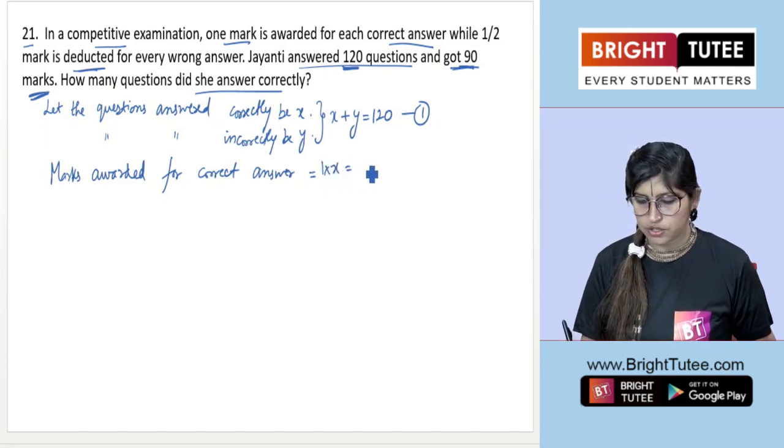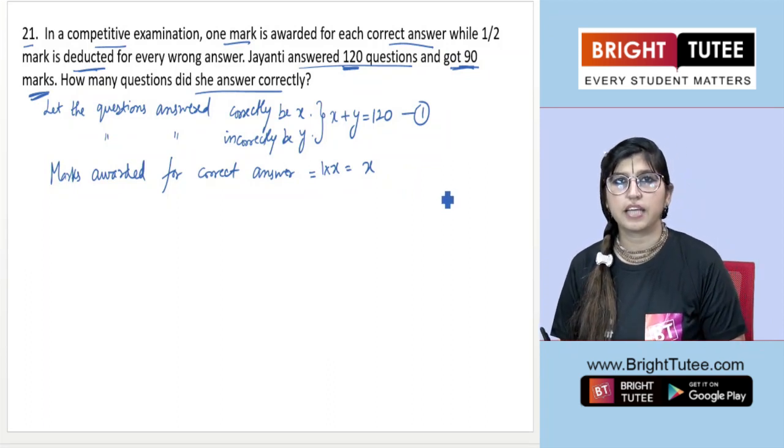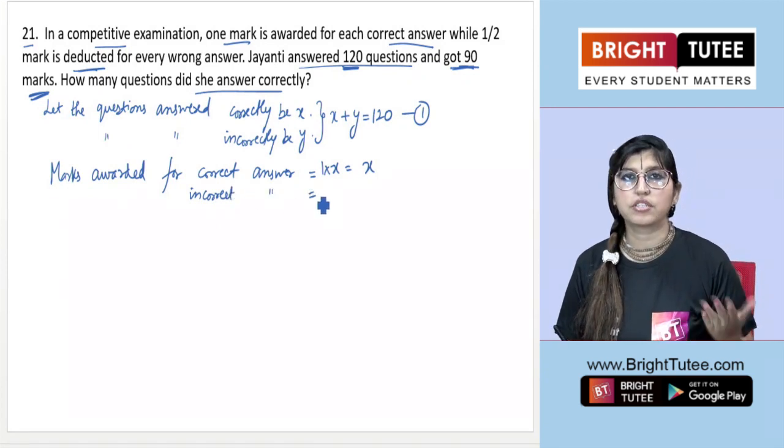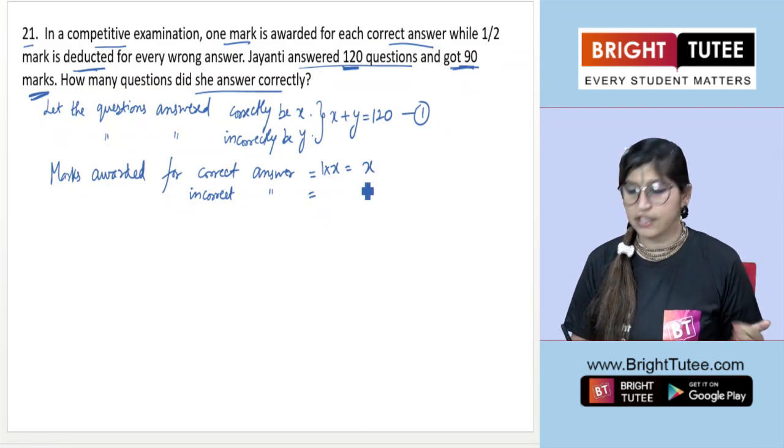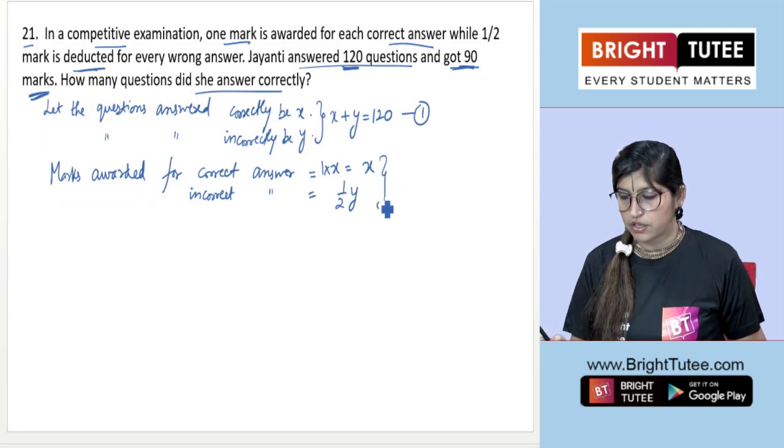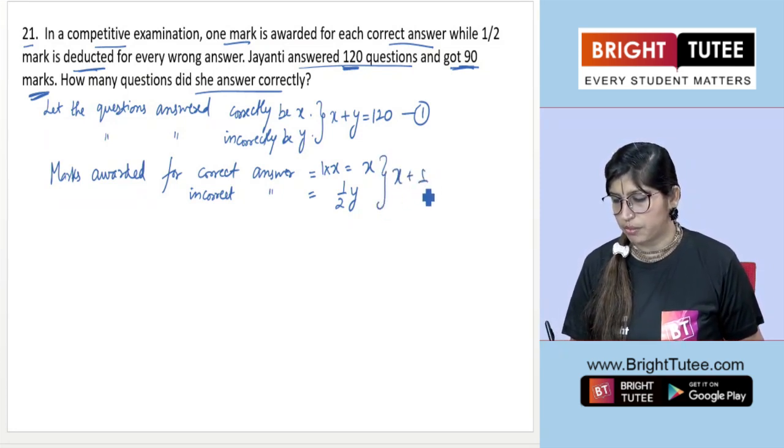For incorrect answers, we are subtracting or deducting half of the number of questions answered incorrectly, so we're deducting 1/2 of y.